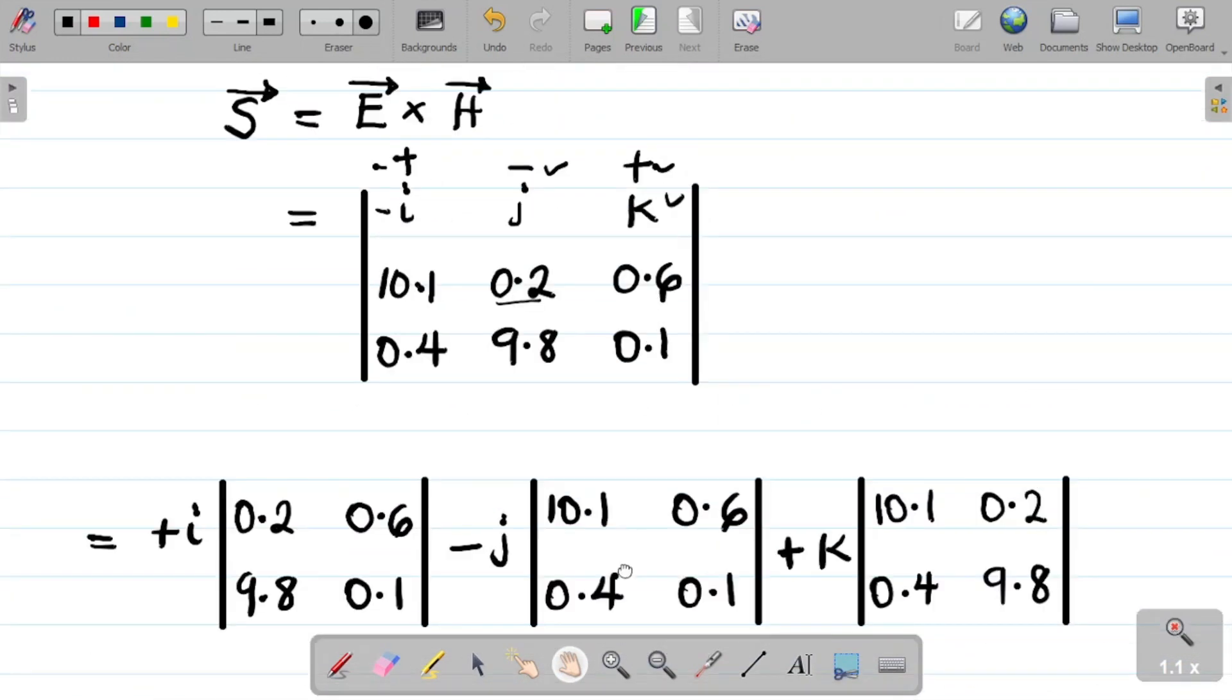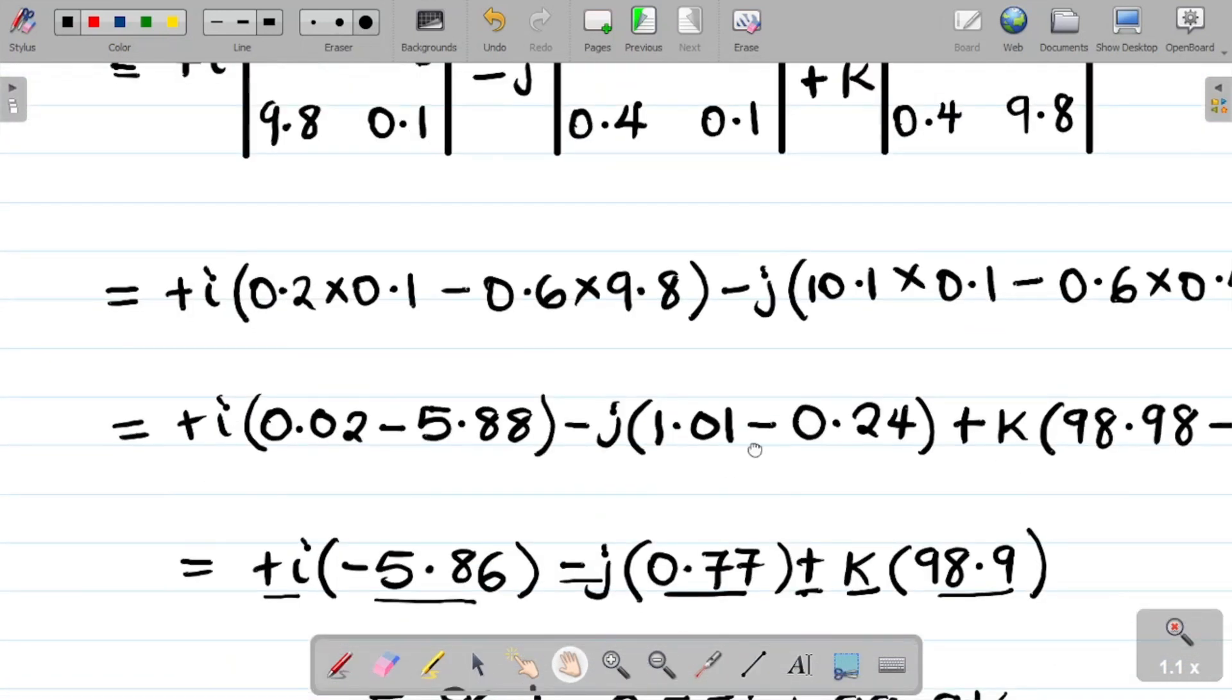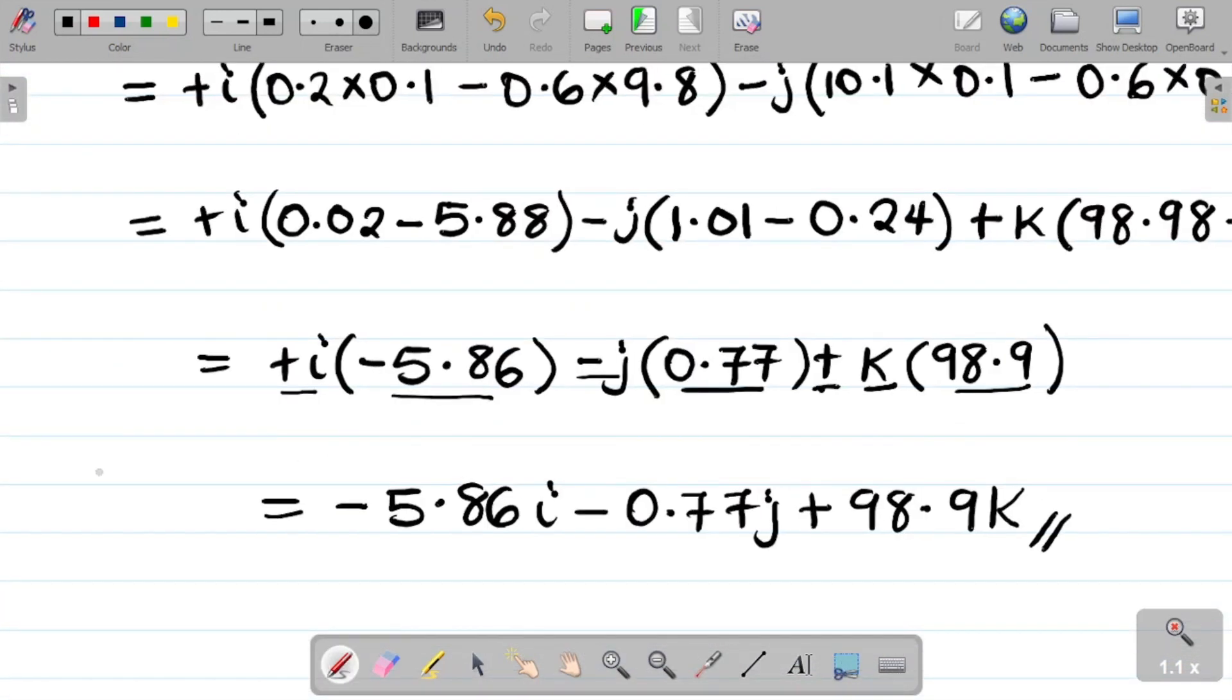So at this point now my final step would just be take the letters behind. So plus i, i times i minus i times this gives you minus 5.86 i. Finally I have plus, so it becomes plus k times 98.9 gives you 98.9 k. So this becomes the value of S. Just to confirm that, that was S we asked to find. That becomes the value of S. So this is how we solve this question.